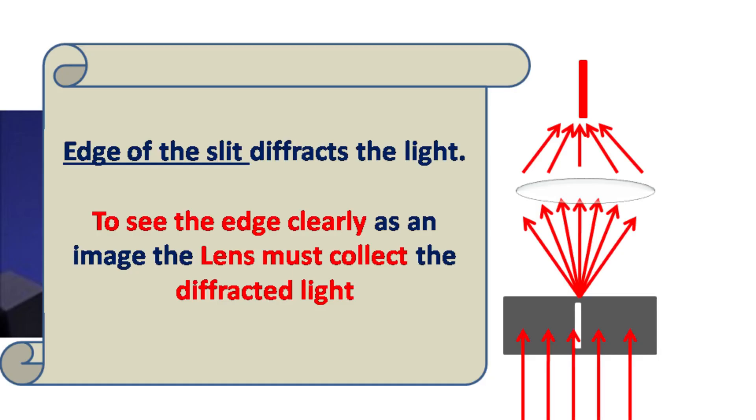A very important point to note is that it's the edge of the slit that diffracts the light. To see the edge of the slit clearly as an image, the lens must collect the diffraction pattern. If the lens fails to collect the diffraction pattern, the image formed is blurred.